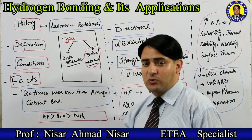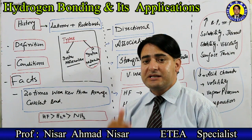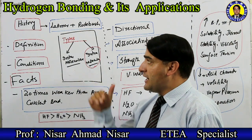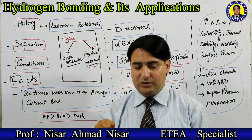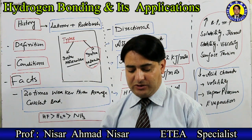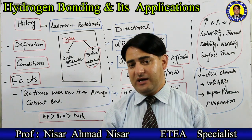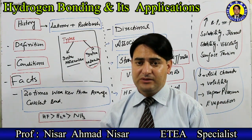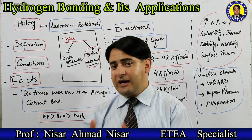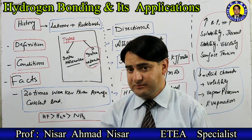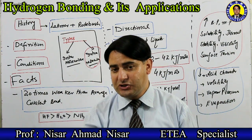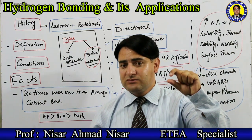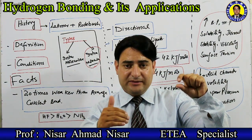Hydrogen bonding was first described by Latimer and Rodebush. The definition is: the force of attraction between partial positive hydrogen and a highly electronegative atom — that is fluorine, oxygen, and nitrogen. This force of attraction between partial positive hydrogen and a highly electronegative atom is called hydrogen bonding.